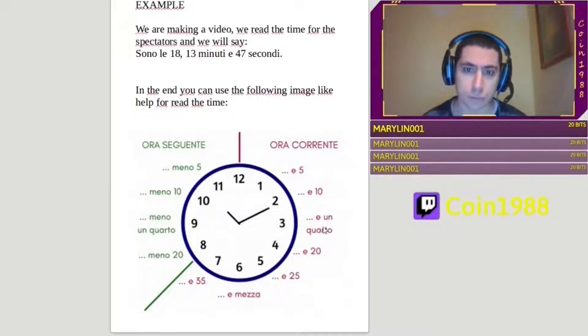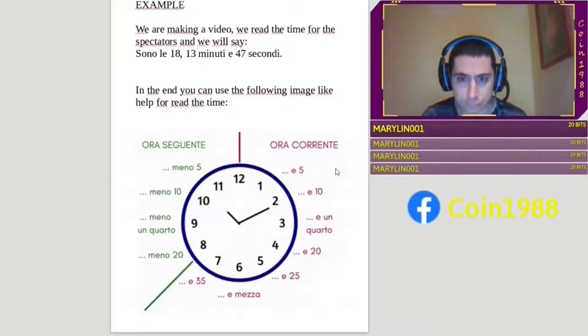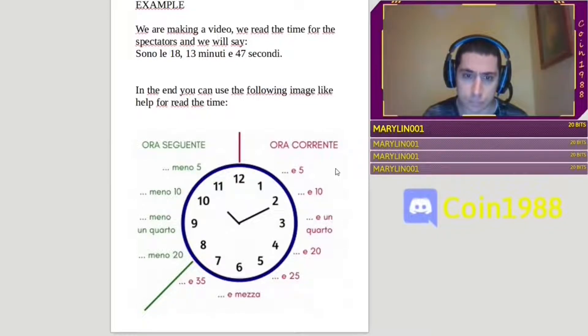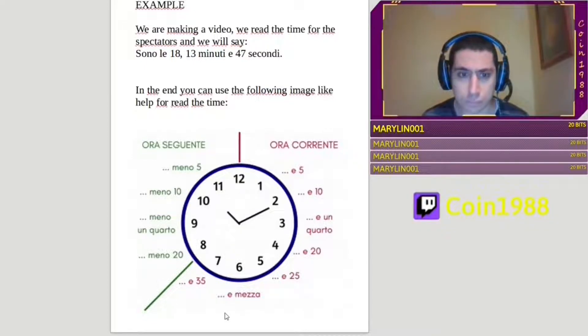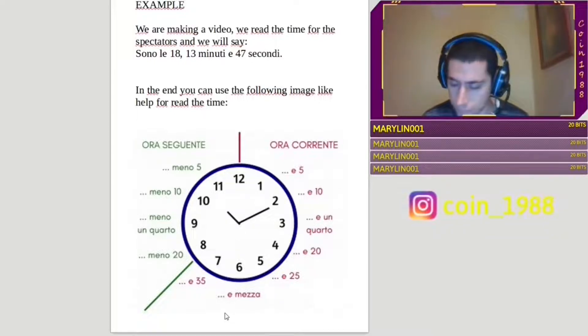Le dieci e cinque. Le dieci e dieci. Le dieci e un quarto. Le dieci e venti. Le dieci e venticinque. Le dieci e mezza. Le dieci e trentacinque. Undici meno venti. Undici meno un quarto. Undici meno dieci. Undici meno cinque. Perfect.